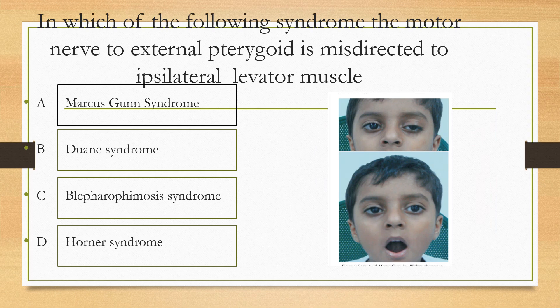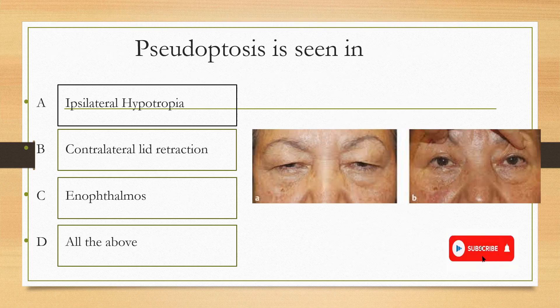Which of the following syndromes involves the motor nerve to the external pterygoid muscle being misdirected to the ipsilateral levator muscle? The options are: option A Marcus Gunn syndrome, option B Duane's syndrome, option C blepharophimosis, option D Horner's syndrome. The answer is Marcus Gunn syndrome.